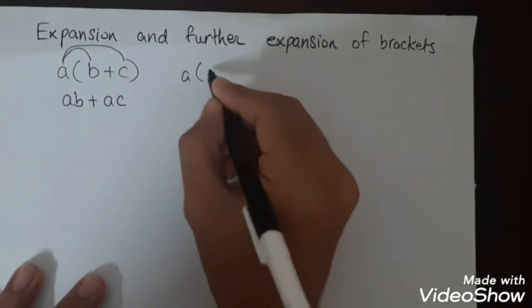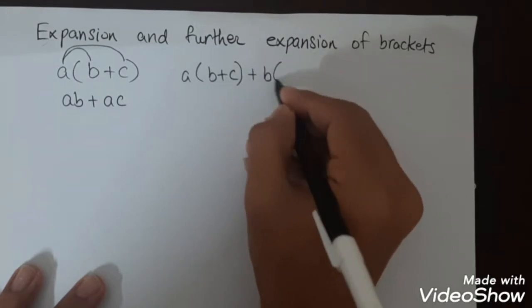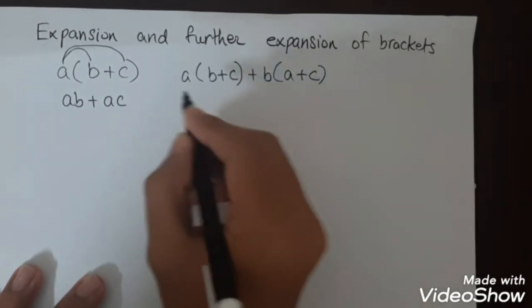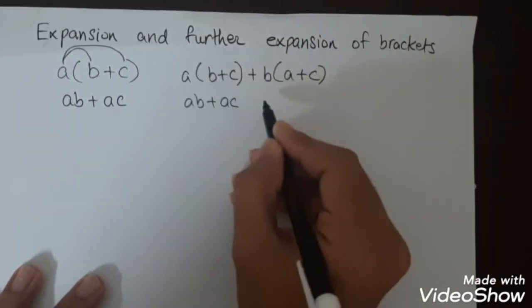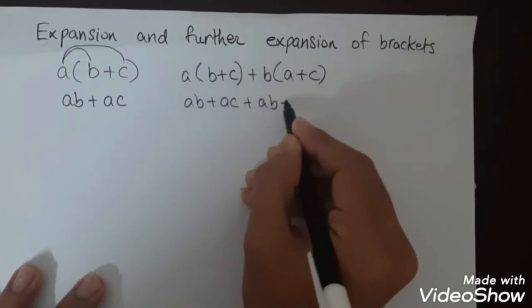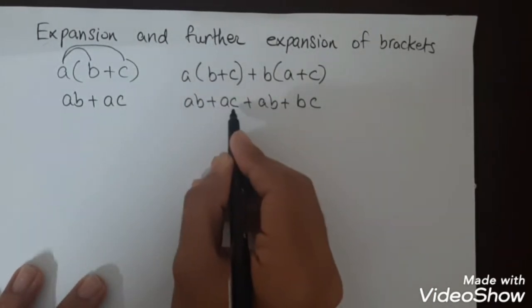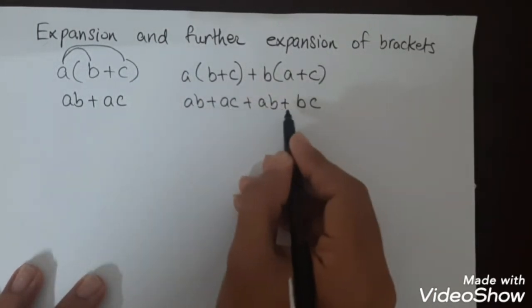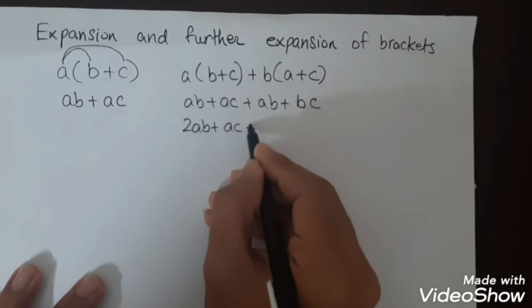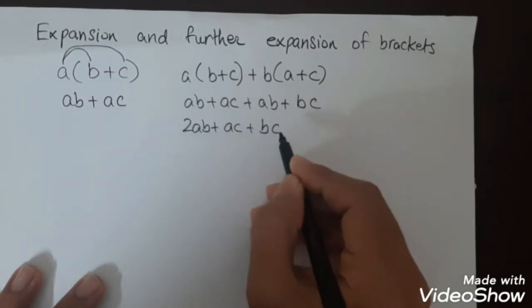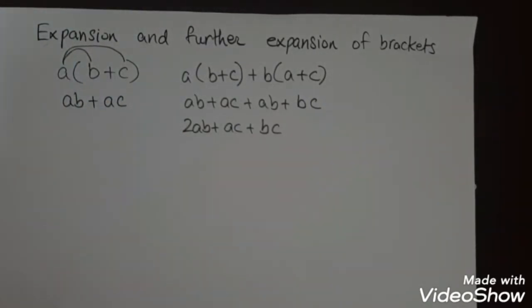Another example of this expansion can be a(b+c) plus b(a+c). Over here it will be ab plus ac plus ab plus bc. So we will add ab plus ab, and ac and bc will remain the same. So 2ab plus ac plus bc.